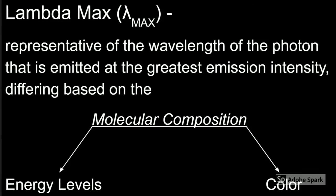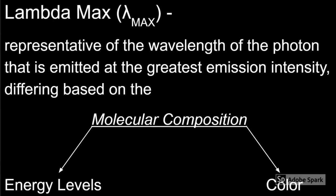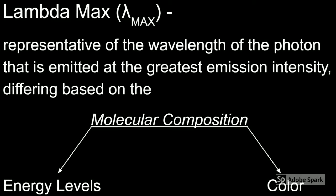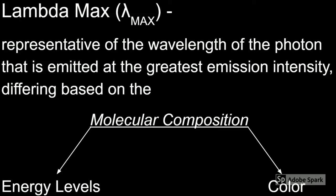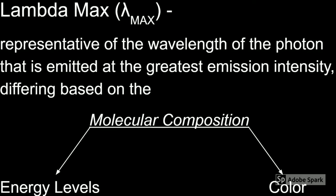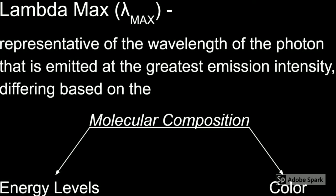In emission spectroscopy, lambda max is representative of the wavelength of the photon that is emitted at the greatest emission intensity. Lambda max is determined by the molecular composition of the dyes, but this can result in different colors being observed. This further supports that the observed color of a substance does not determine the lambda max on an emission spectrum.